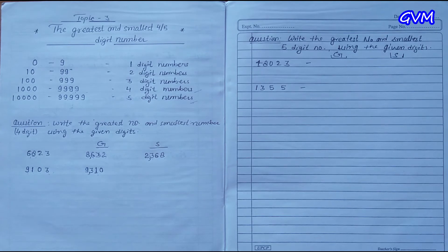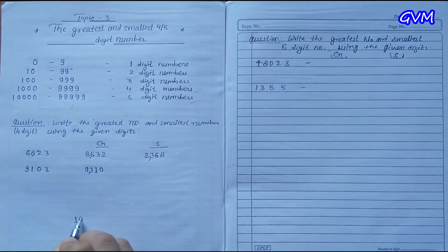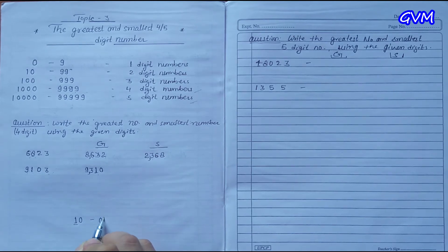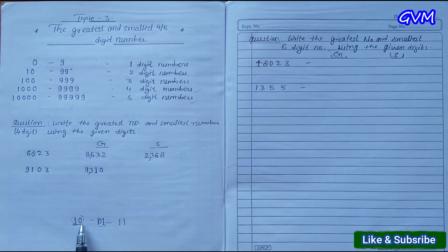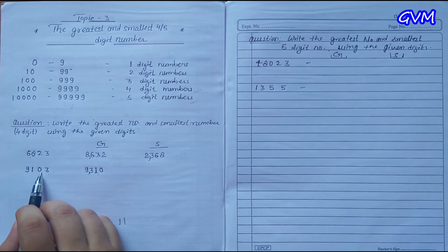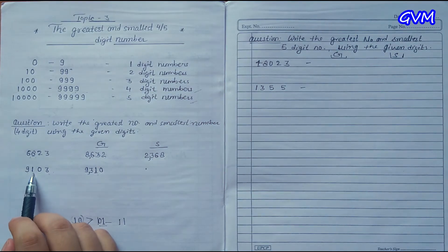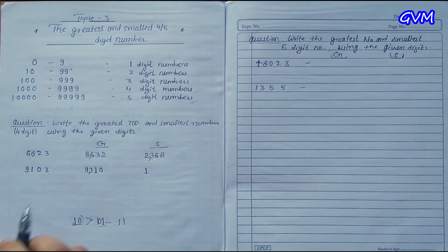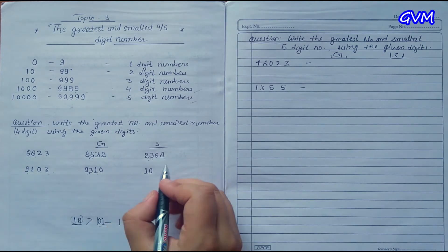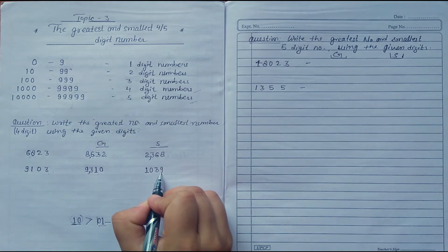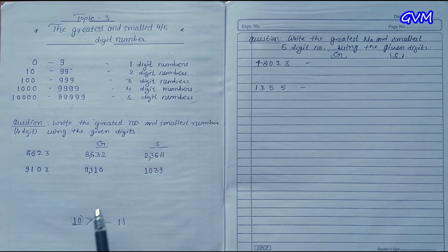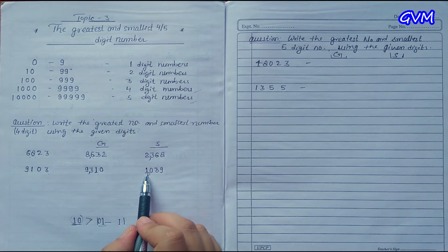For the smallest number, we do not put 0 on the first place, because zero reduces the value of the number. For example, 10 is greater than 01, which is just 1. That is why we do not put 0 in the first place. So we write 1 first, then 0, then 3, and then 9. Put a comma — this gives us 1,039 as the smallest number.